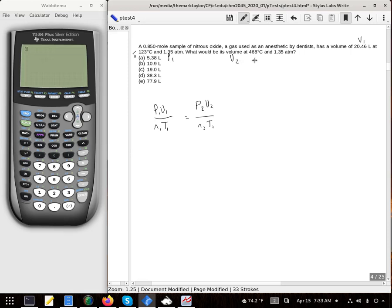We're going to solve for V2. There is T2 and that is P2. And there isn't an N1 and N2 because it does say a 0.850 mole sample.